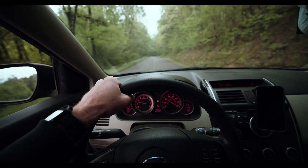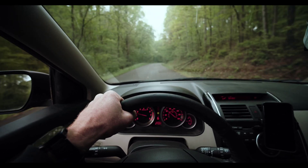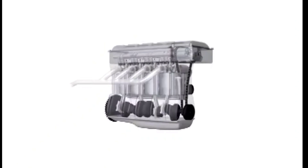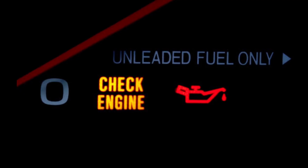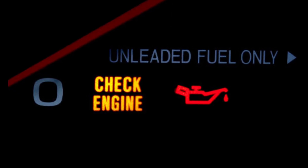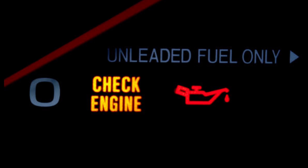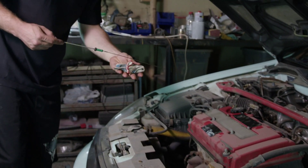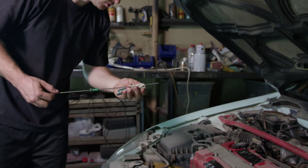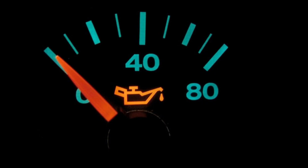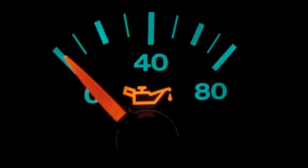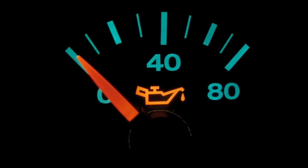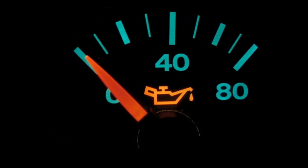Running an engine with low oil pressure can cause severe damage to the moving parts of the engine due to friction, so it's important to address the issue immediately. If the oil indicator light or check engine light comes on, it's important to check the oil level right away and top it off as required. If the oil pressure indicator light persists, take your car to a mechanic as soon as possible. If necessary, the oil pump or other components may need to be replaced.